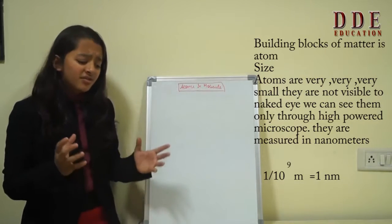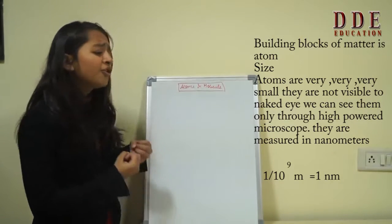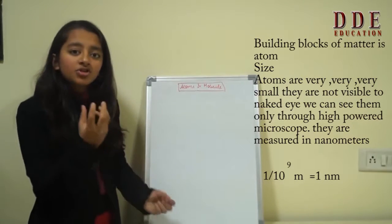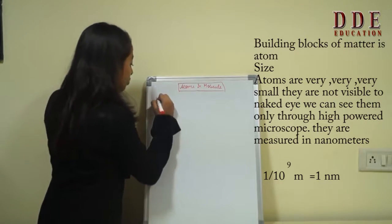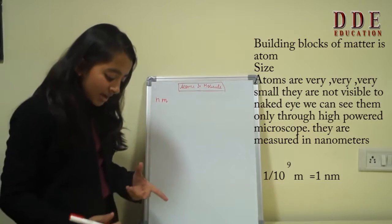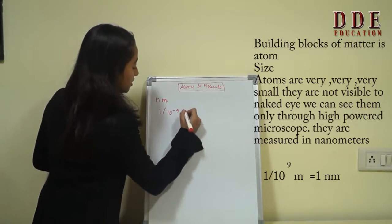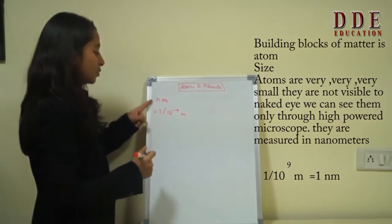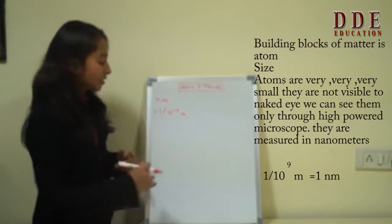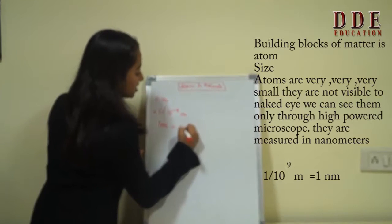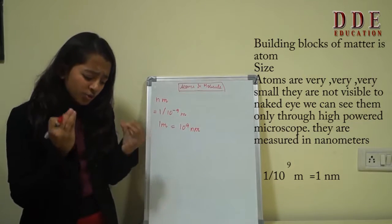Atoms are very very small in size. They are small beyond our imagination. And for representing such small masses and diameters we use units such as nanometers. One nanometer equals 10^-9 meter. And one meter equals 10^9 nanometer. So you see how small atoms are?